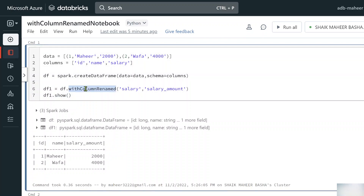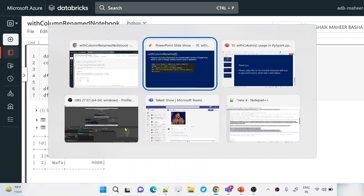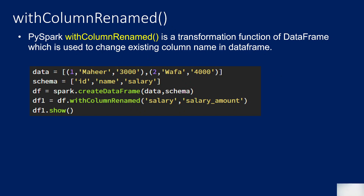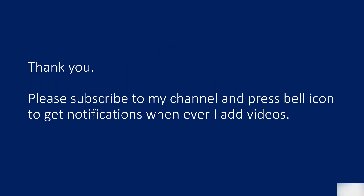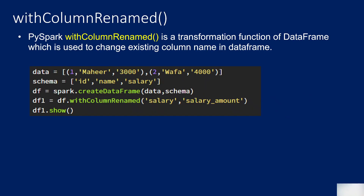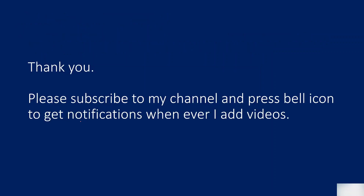So that's how using the withColumnRenamed function you can rename existing columns. We had three columns, used withColumnRenamed to rename salary to salary_amount, it produced a new DataFrame, and we displayed it with show(). That's it for this video — thank you for watching. Please subscribe to my channel and press the bell icon to get notifications whenever I add new videos.